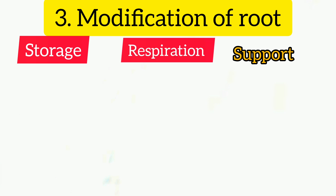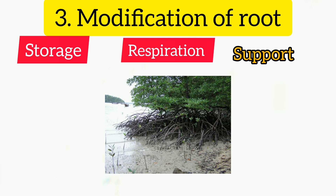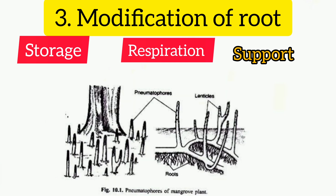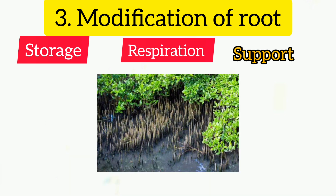Respiratory roots: plants like Rhizophora grow in swampy areas. These roots have pores called pneumatophores. Because there is no oxygen in waterlogged soil, these roots grow upward showing positive phototropism, rather than downward positive geotropism, to obtain oxygen.